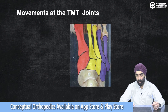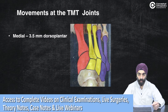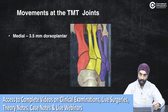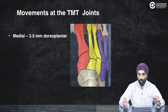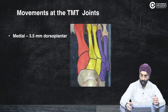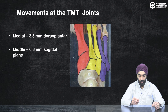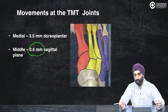We should know what movements occur at the tarsometatarsal joints. Looking at the medial column, the tarsometatarsal joint has only about 3mm of movement in the dorsoplantar plane, with some abduction and adduction as well. The middle column has only 0.6mm of movement in the sagittal plane — really no movement at all.